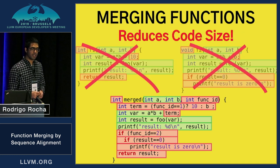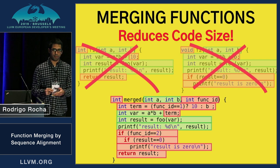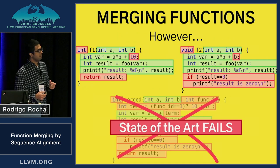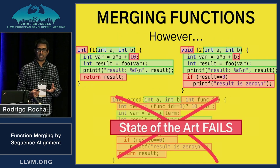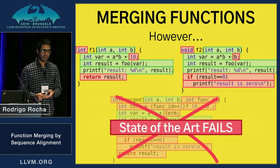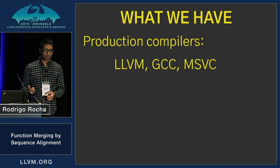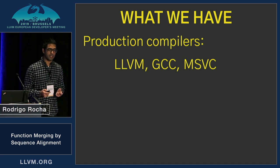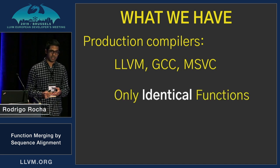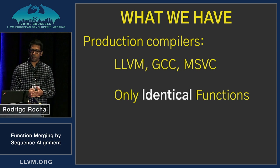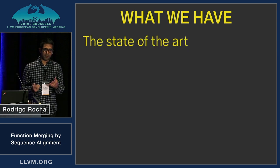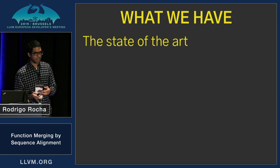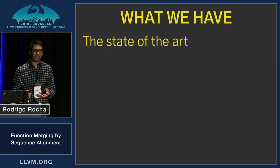And because we can delete both original functions, this reduces code size, which is great. But the problem is that none of the existing techniques were able to do that, even for this very simple example. Production compilers are only able to merge identical functions, which is very limited, and the state of the art, although able to improve a lot over this simplistic technique, still it's not enough.